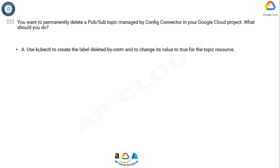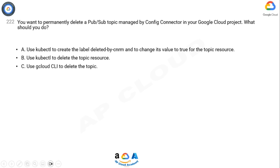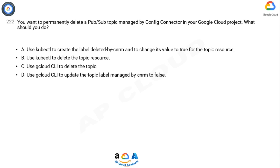A. Use kubectl to create the label deleted-by-CNRM and to change its value to true for the topic resource. B. Use kubectl to delete the topic resource. C. Use Cloud CLI to delete the topic. D. Use Cloud CLI to update the topic label managed-by-CNRM to false.